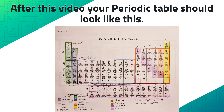You should color in your periodic table similar to this one here. Color your alkali metals green, your alkaline earth metals blue, and your metalloids purple. Shade in the lanthanide and actinide series with light pink. Your halogens are going to be orange and your noble gases yellow. Then outline your S block in green, your P block in red, your D block in blue, and your F block in pink.